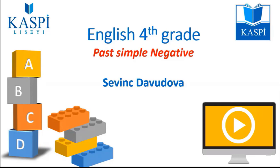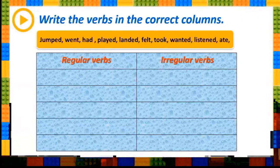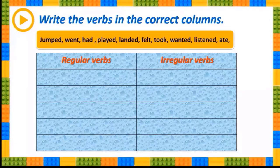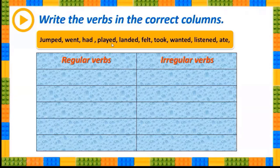Let's look at the table. Firstly, we have got regular verbs and irregular verbs. As we remember, when we make a simple positive, verbs have two forms. Regular verbs are formed by adding -ed to the end of the verb, but when we make irregular verbs, the verbs completely change.